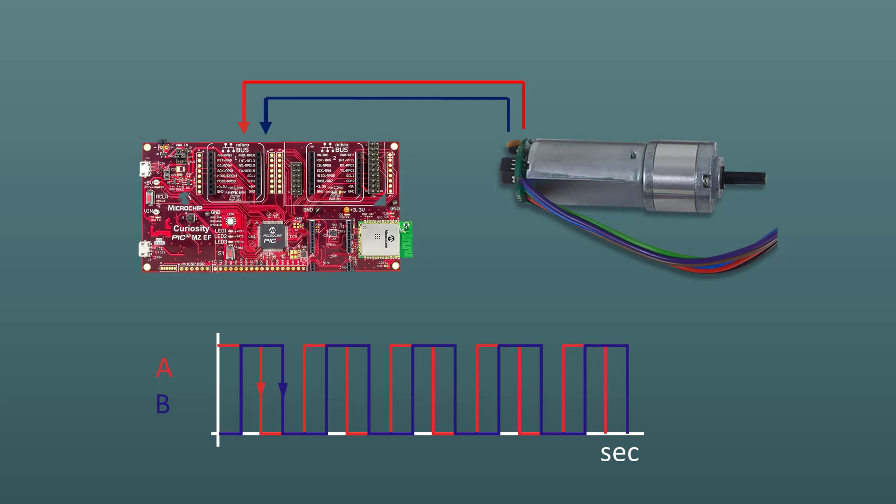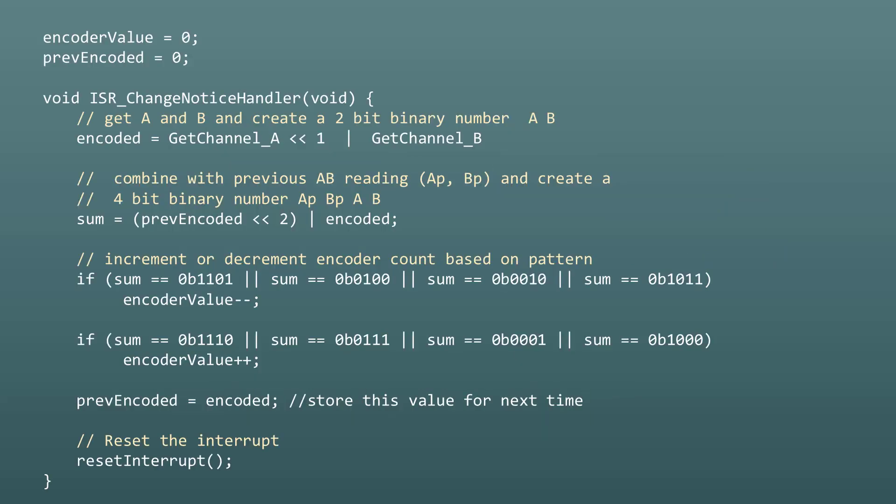The interrupt routine can check to see which channel has changed and then update the encoder count. Here's an interrupt service routine that reads channels A and B and performs the quadrature calculations.